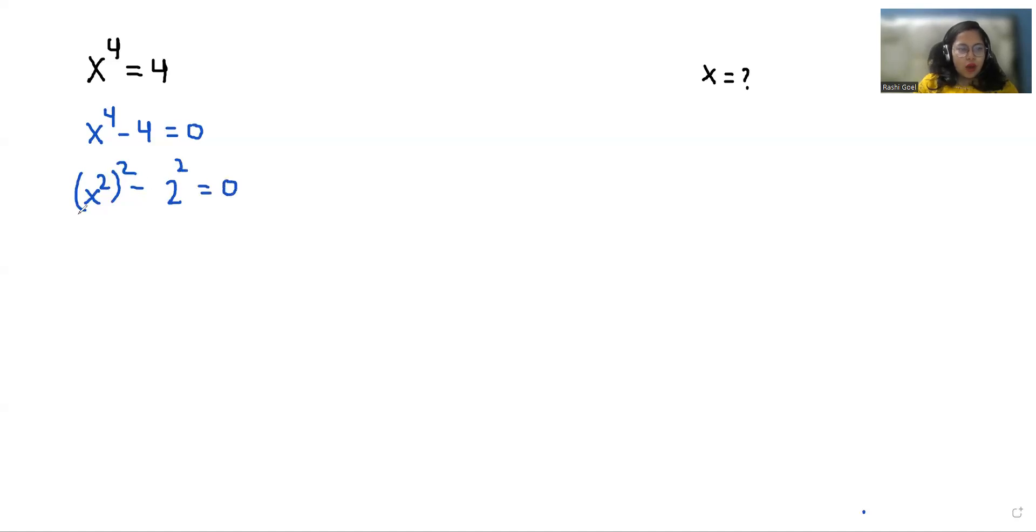Now we are going to use a very famous identity that is a² - b² which equals (a - b)(a + b). So if we put the values here it becomes (x² - 2)(x² + 2) = 0. Now we have two roots, both equal to 0.